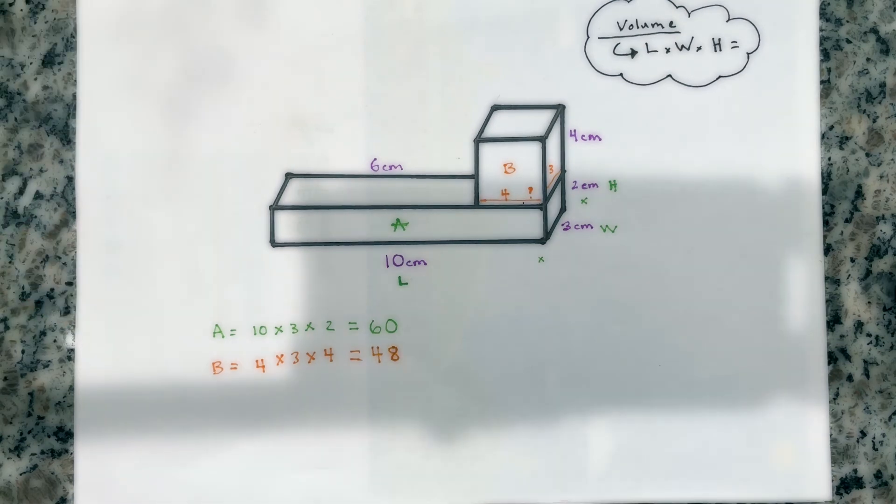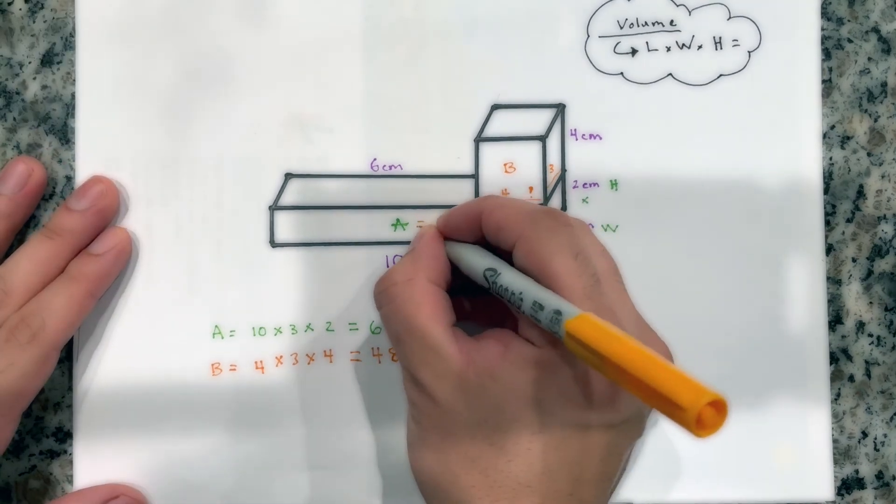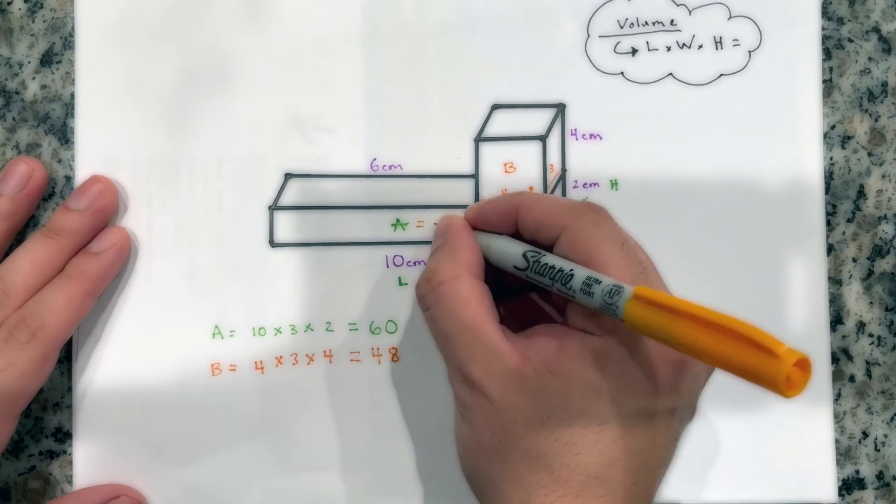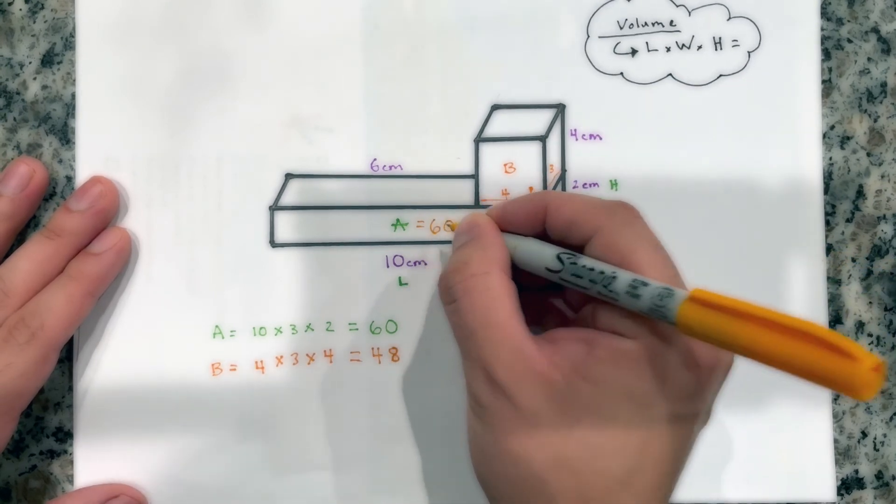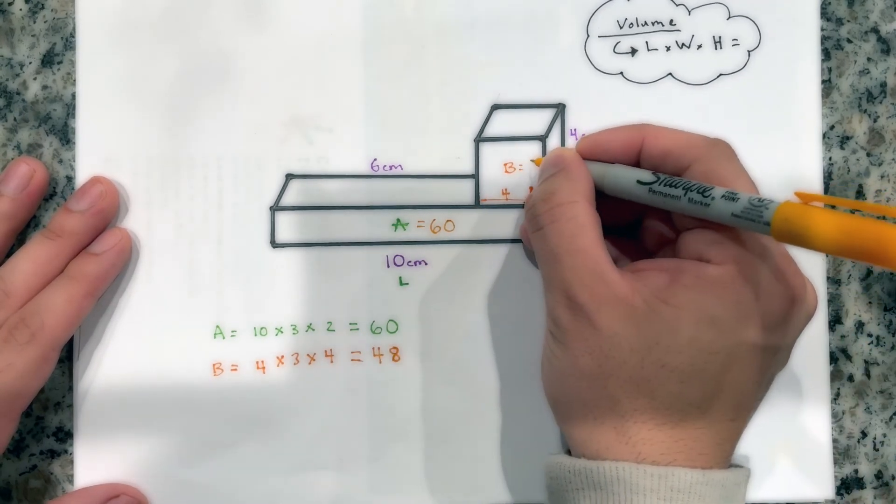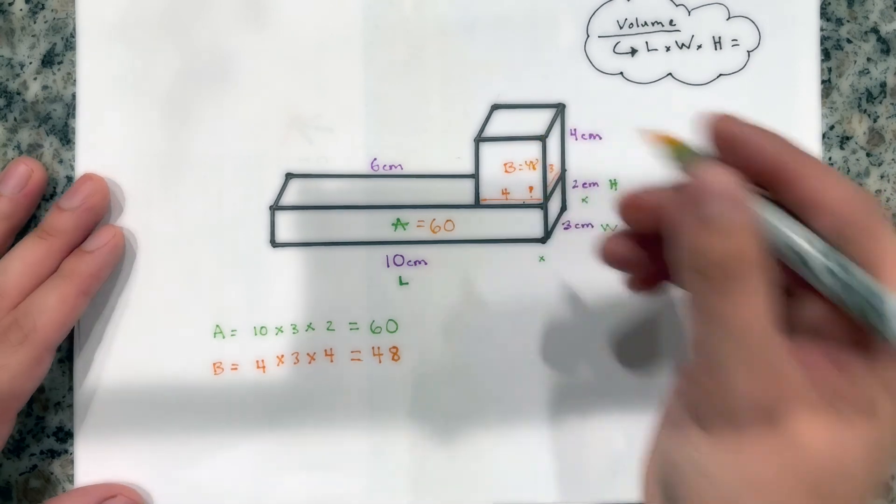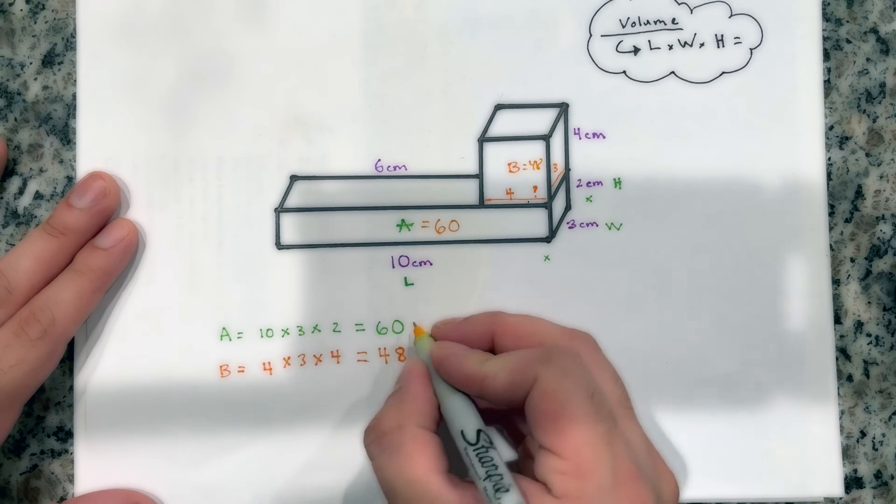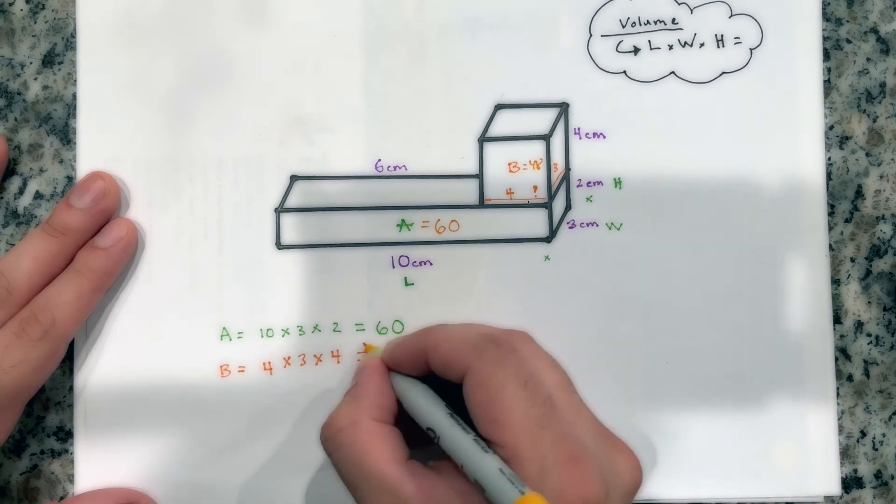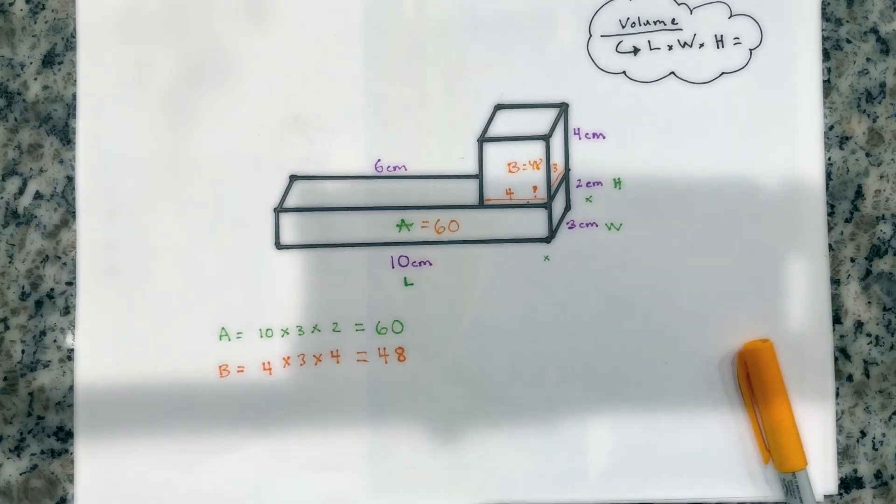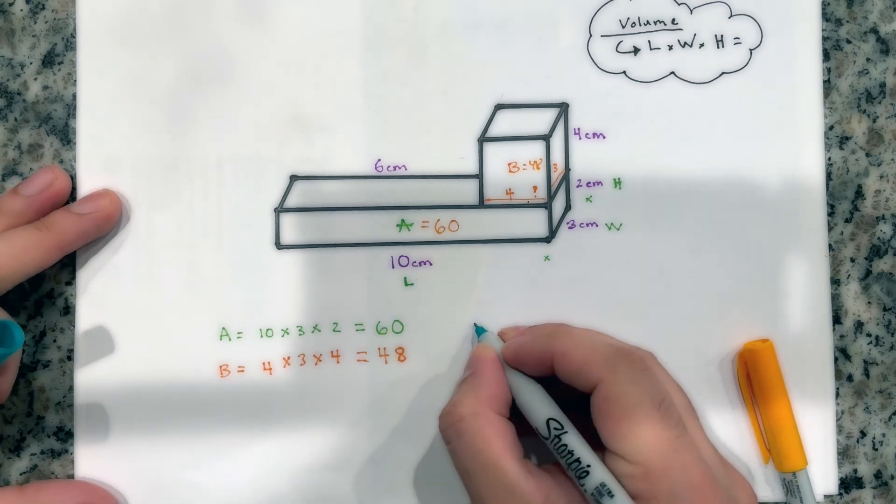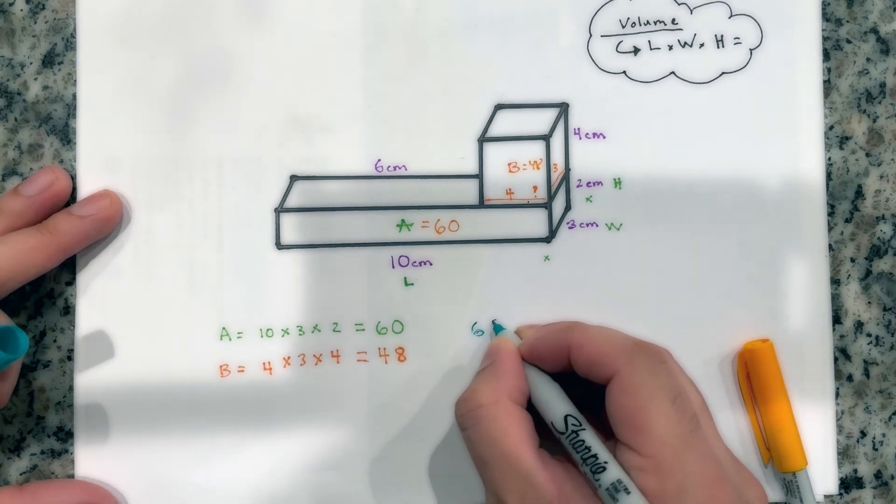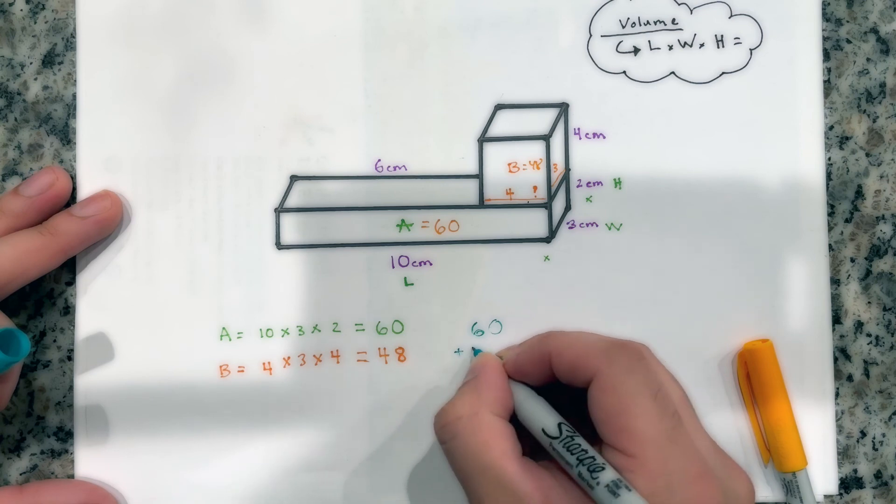So now we have found the volume of box A, which is 60, and box B, which is 48. Now your final step is just add those bad boys up like we were in first grade. So 60 plus 48. I'll do that right here. 60 plus 48.